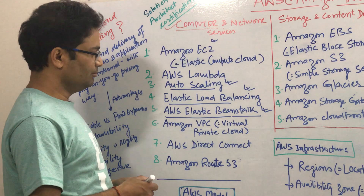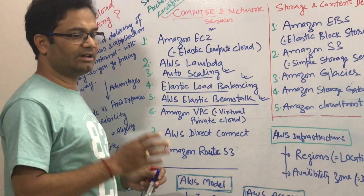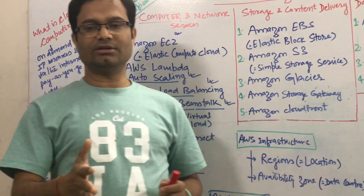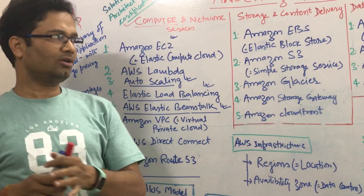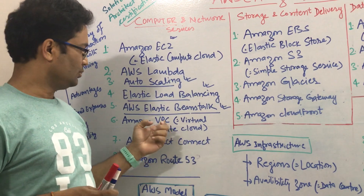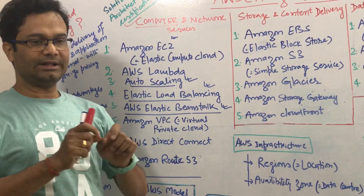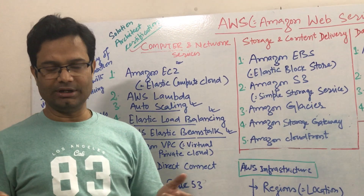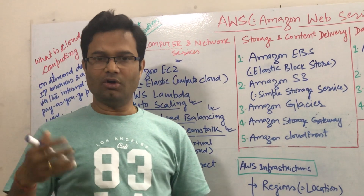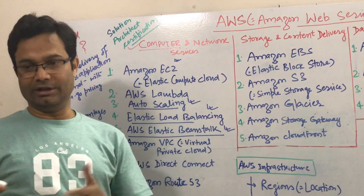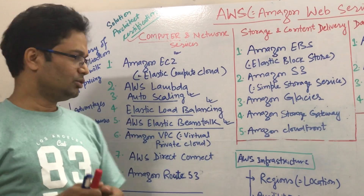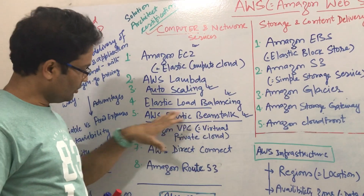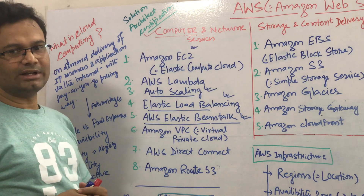Next is VPC — Virtual Private Cloud. If any organization wants to make a logical isolation of the AWS cloud, they can do VPC. In the VPC, they can define the range of IP addresses, define their own subnet, define the routing table, internet gateway — all those things they can define into AWS. This is the VPC, and it is one of the important features that many organizations use.